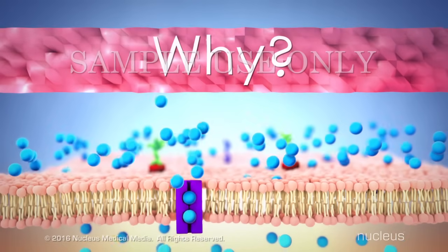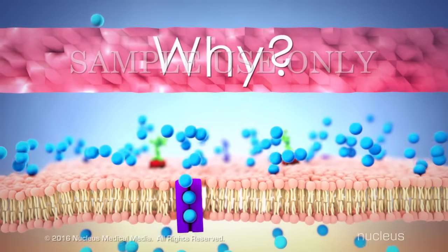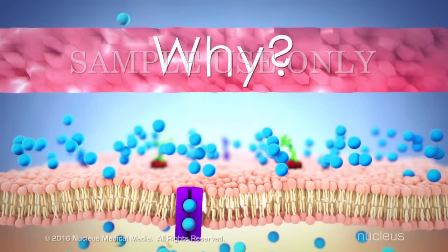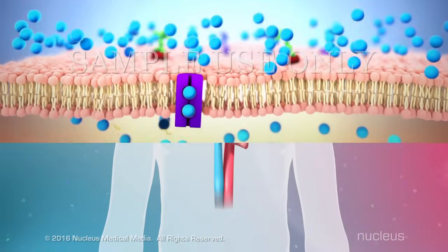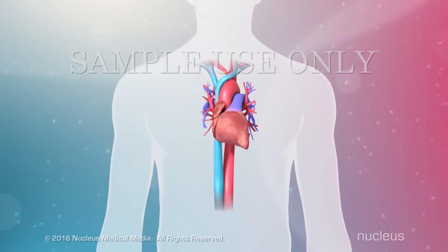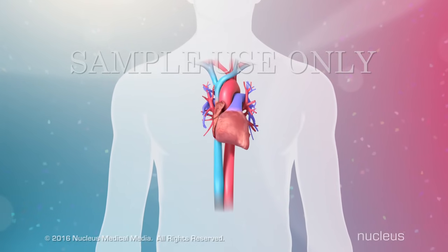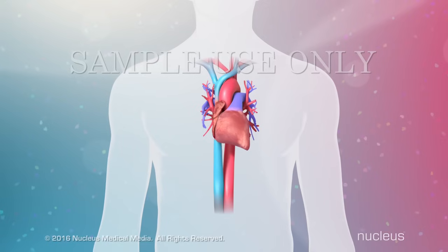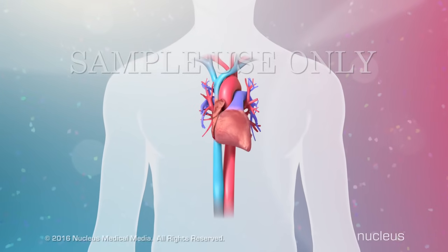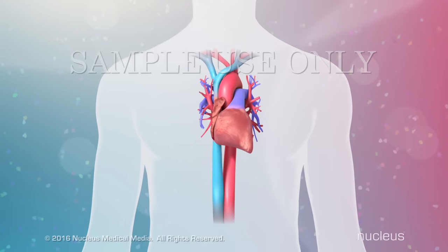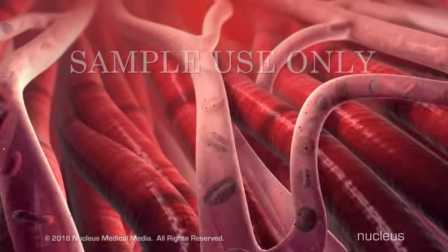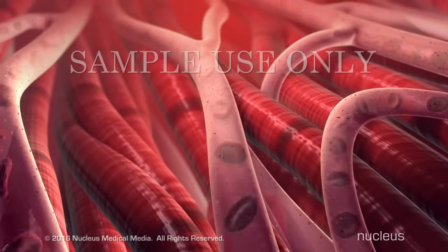Why would the cell need to move particles from a low to high concentration and expend energy to do it? An important example is seen in your heart muscle cells. In order for your heart to beat, there are certain molecules that have to move from an area of low concentration to an area of high concentration for those cardiac muscle cells to work.